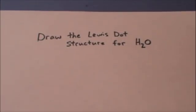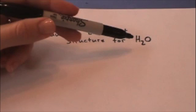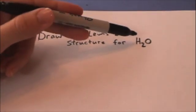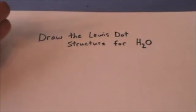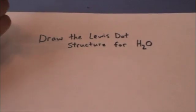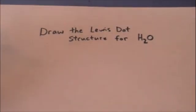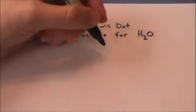Alright, draw the Lewis dot structure for water. Well, we know that it's going to have to be HOH because hydrogens only can form one bond, and if you put a hydrogen in the middle of that structure then that hydrogen would have to form two bonds.